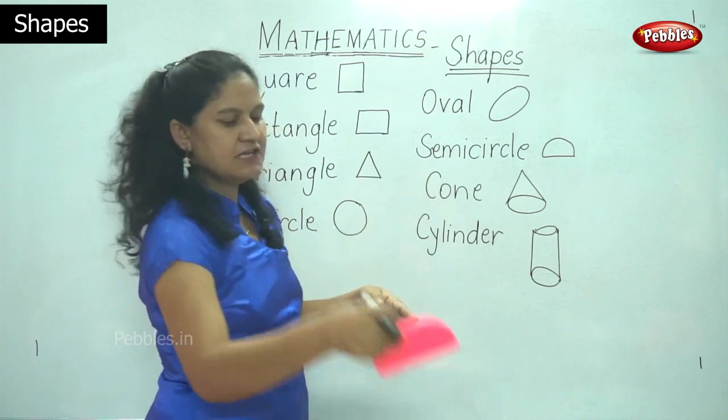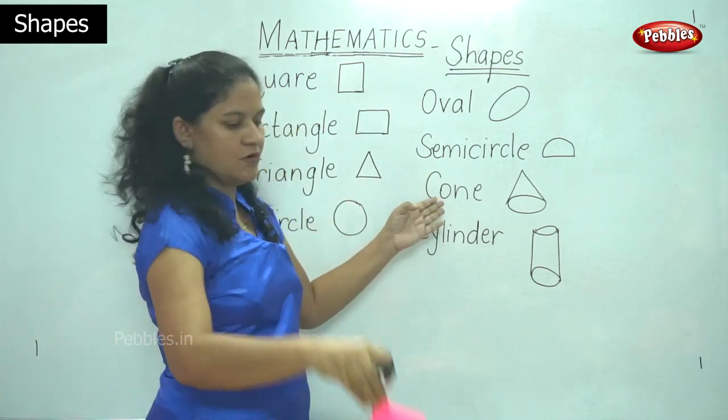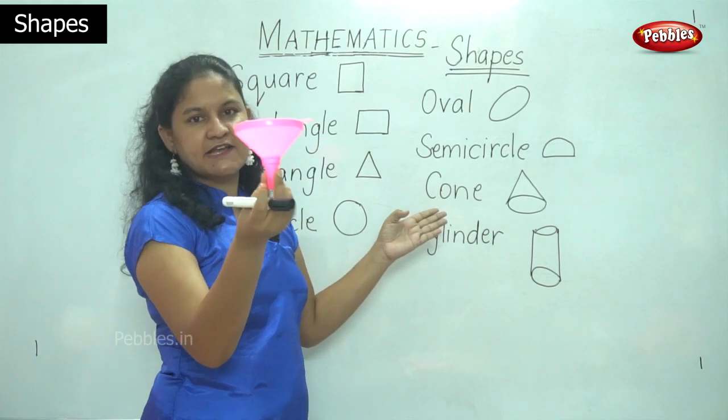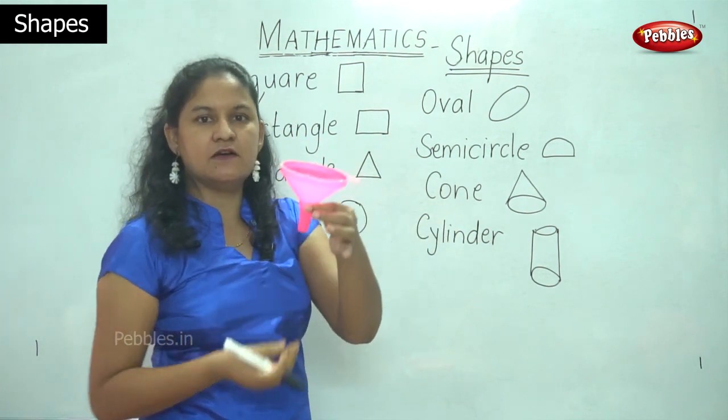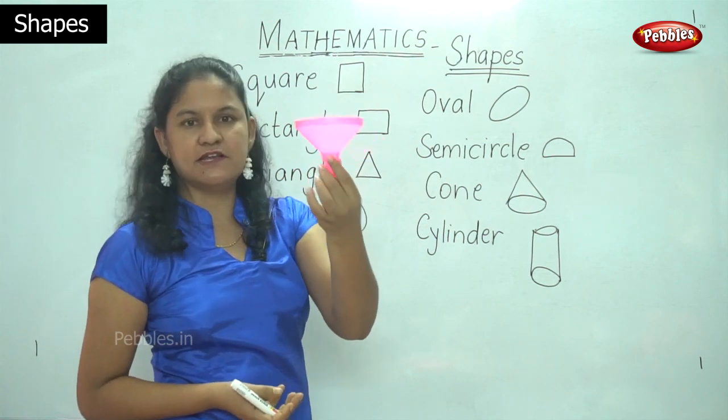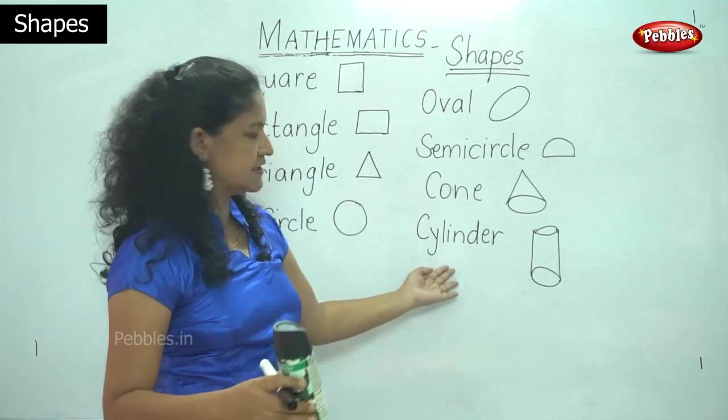The semicircle. The cone. This is the cone. This is actually a funnel that we use to pour water in a bottle or any other liquids. And this is the cylinder.